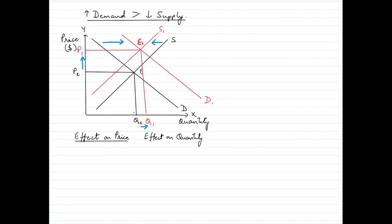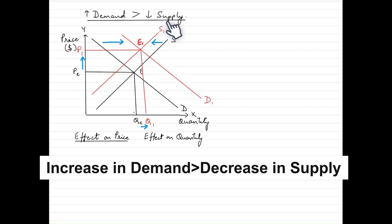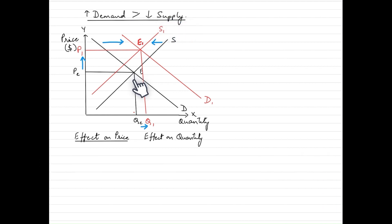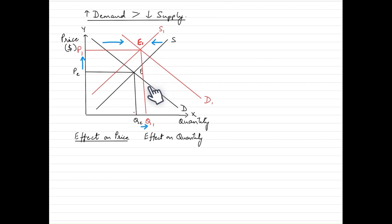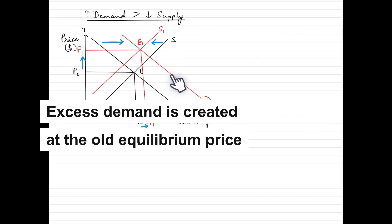This is a scenario where the increase in demand is greater than the decrease in supply. The market for this commodity is at initial equilibrium E, corresponding to price Pe and quantity Qe. When there's an increase in demand greater than the decrease in supply, it will have a very significant impact on market equilibrium. It is evident that the price is rising drastically and there's also some change in quantity. Since the increase in demand is greater than the decrease in supply, the quantity demanded at the old price is much greater than what is being supplied.